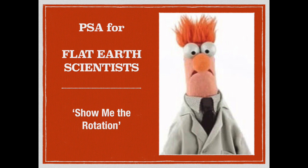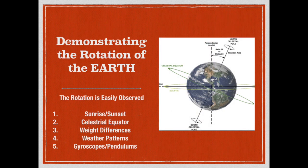This isn't obvious to everyone, but it's easy to see if you know what to look for. There are actually a number of ways you can tell the Earth is rotating just from here on the ground. Examples include sunrise and sunset, star tracks viewed from the celestial equator, weight differences based on latitude, weather patterns due to the Coriolis effect, and gyroscopes and pendulums — but there are many other ways as well.